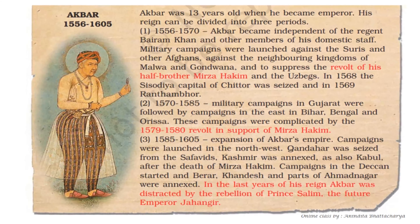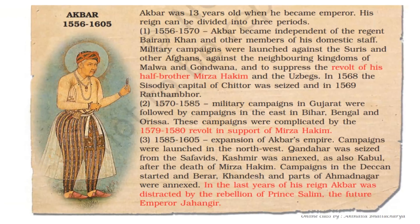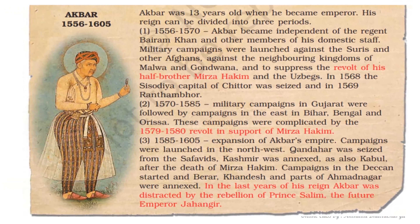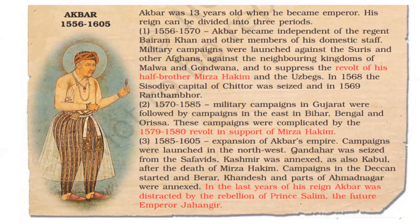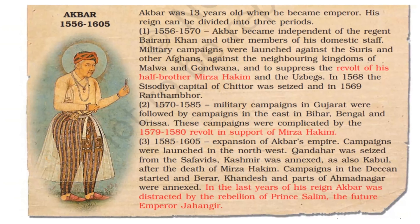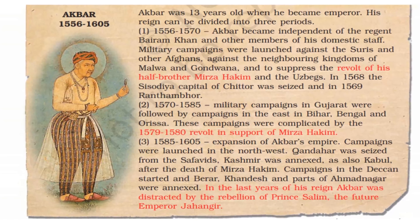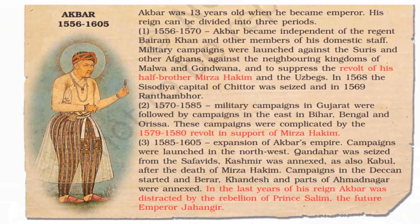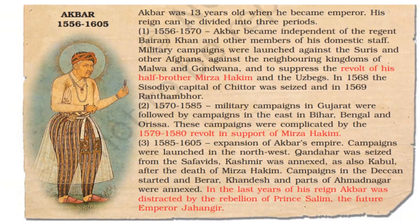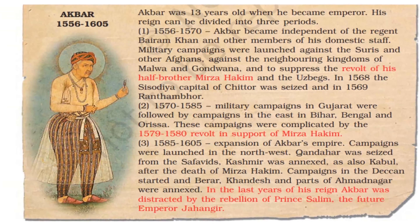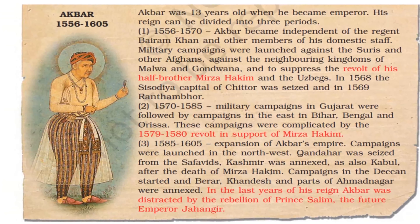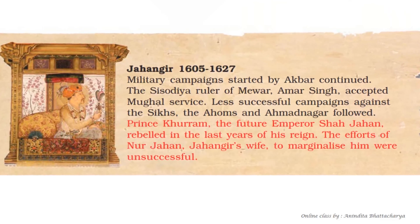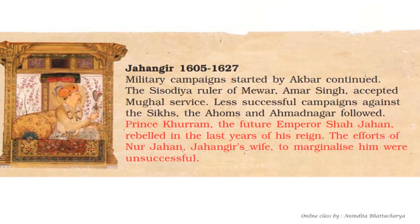From 1570 to 1585, many military campaigns in Gujarat were followed by campaigns in the east — Bihar, Bengal, and Orissa. From 1585 to 1605, campaigns were launched in the northwest, marking the peak expansion of Akbar's empire. In Jahangir's period, military campaigns started by Akbar continued, with less successful campaigns against the Sikhs, the Ahoms, and Ahmednagar.